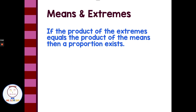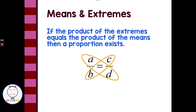Means and extremes: when solving proportions, we use the product of the means and extremes. If the product of the extremes equals the product of the means, a proportion exists. If we have two fractions equal to each other, we can cross multiply and those products are equal — A times D equals B times C. This cross multiplying is a great way to check if we have a proportion, a common ratio, or the same scale factor. We can use this to find missing sides or just check proportionality, and checking proportionality is checking for similarity.